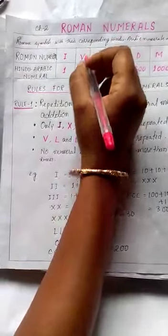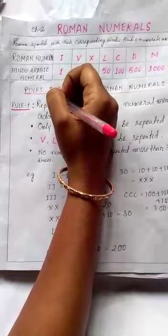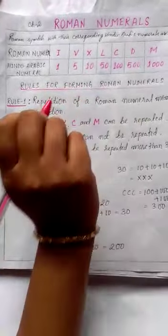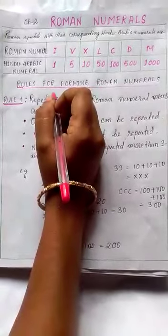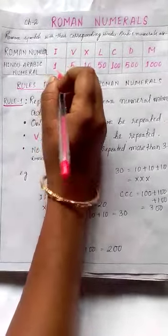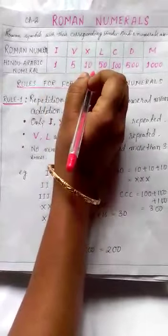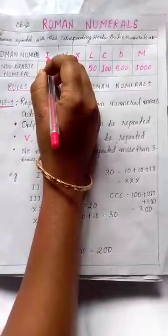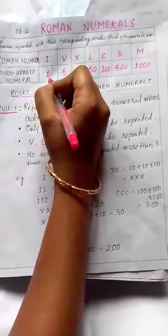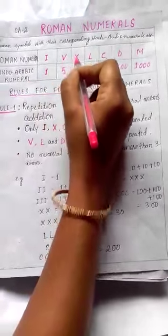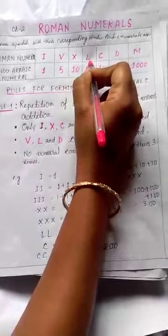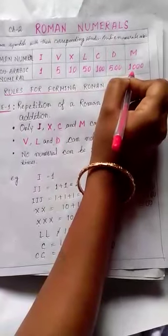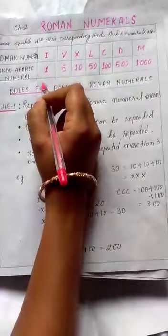Do you know where Roman Numerals originated? This system originated in ancient Rome. There are seven basic symbols, each with a fixed value: I is 1, V is 5, X is 10, L is 50, C is 100, D is 500, and M is 1000.